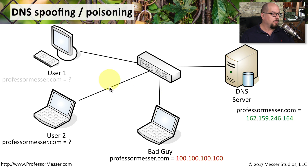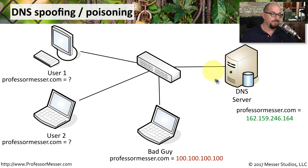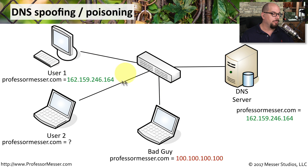User number one is going to make a request to the DNS server, and get the appropriate IP address for that particular domain. It will register and keep that information in its cache.